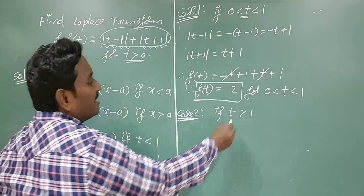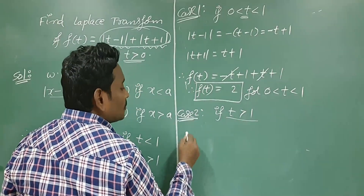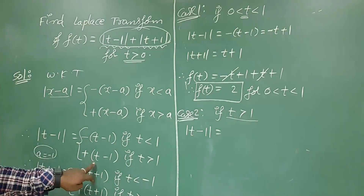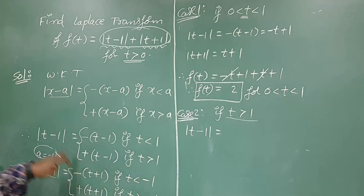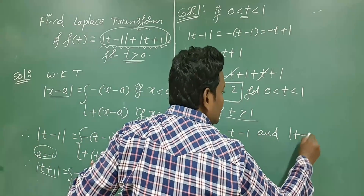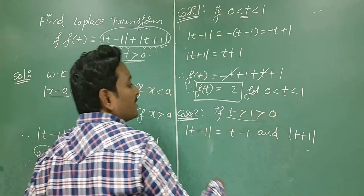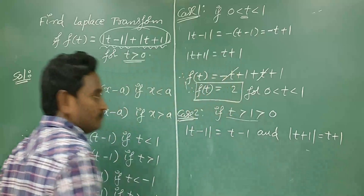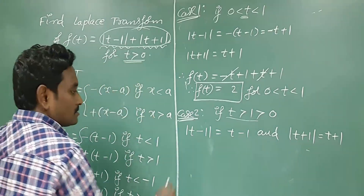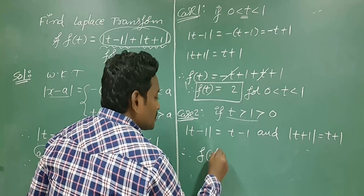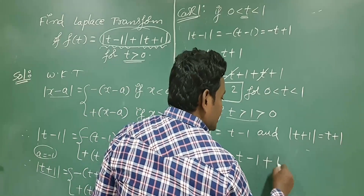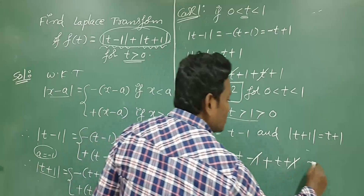Now we have to calculate f(t) if t is greater than 1. In this range, if t is greater than 1 then modulus of t minus 1 is positive of (t minus 1). Also, since t is greater than 1 it is also greater than 0, so modulus of t plus 1 is t plus 1. Adding both parts: t minus 1 plus t plus 1 — the plus 1 and minus 1 cancel — giving 2t.